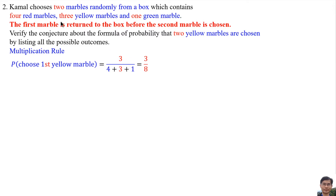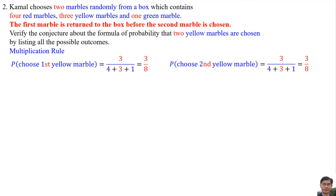3 means there are 3 yellow marbles in the box. 4, 3 and 1 means 4 red marbles, 3 yellow marbles and 1 green marble. Since the first marble is returned, the probability of choosing the second yellow marble is also 3 per 8. So the probability of choosing 2 yellow marbles is 3 per 8 multiplied by 3 per 8, which equals 9 per 64.